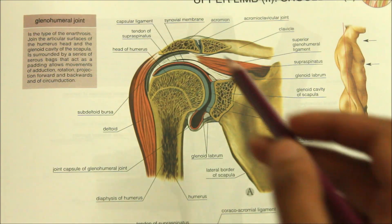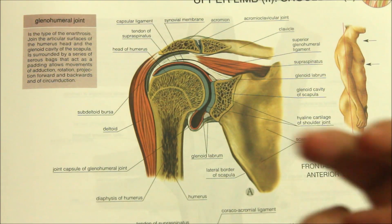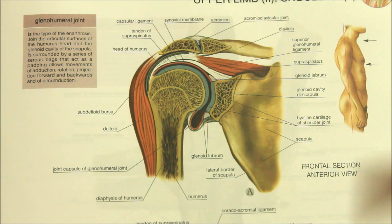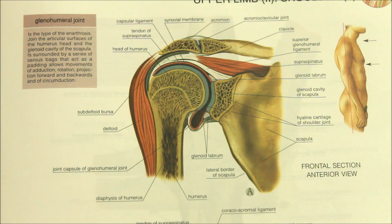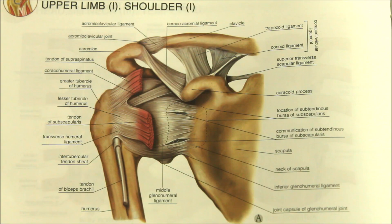The stability of this joint is maintained by three structures: first is the coracoacromial arch, the musculotendinous cuff of the shoulder, and the glenoidal labrum. Now let me briefly explain to you what these three structures are.